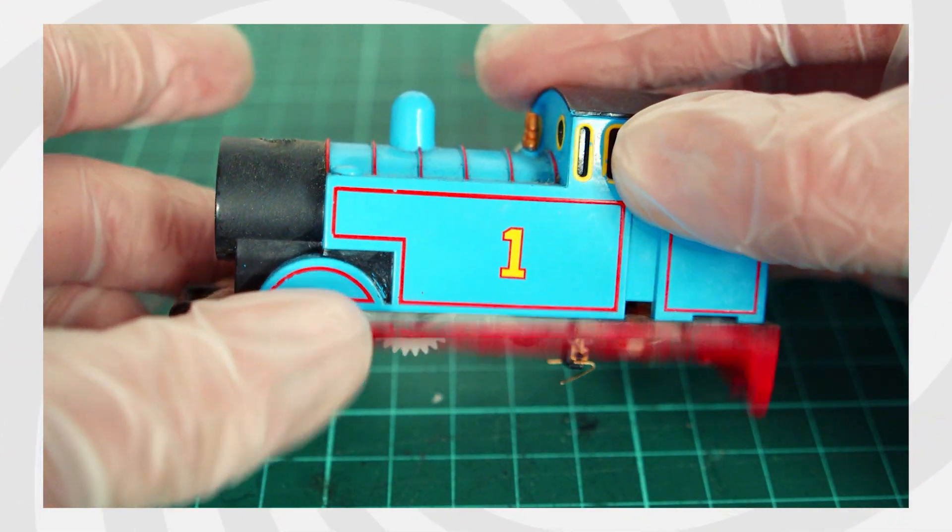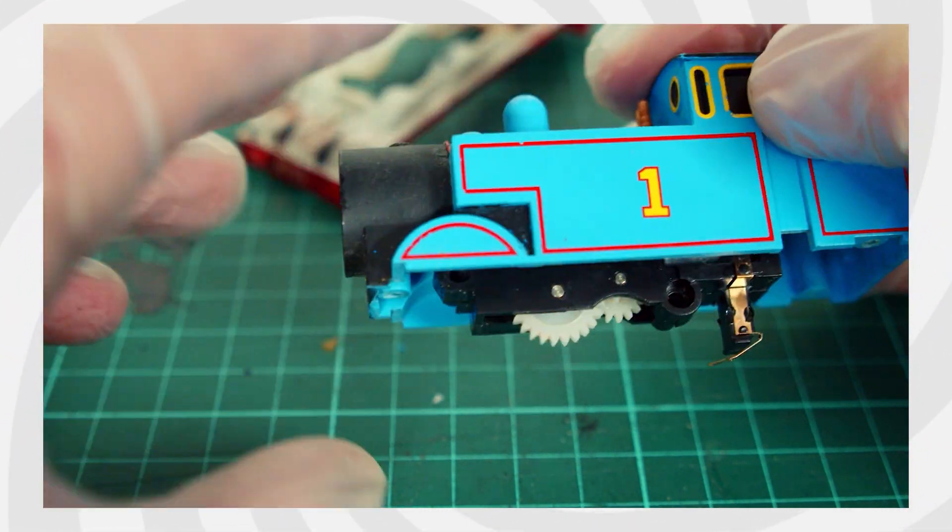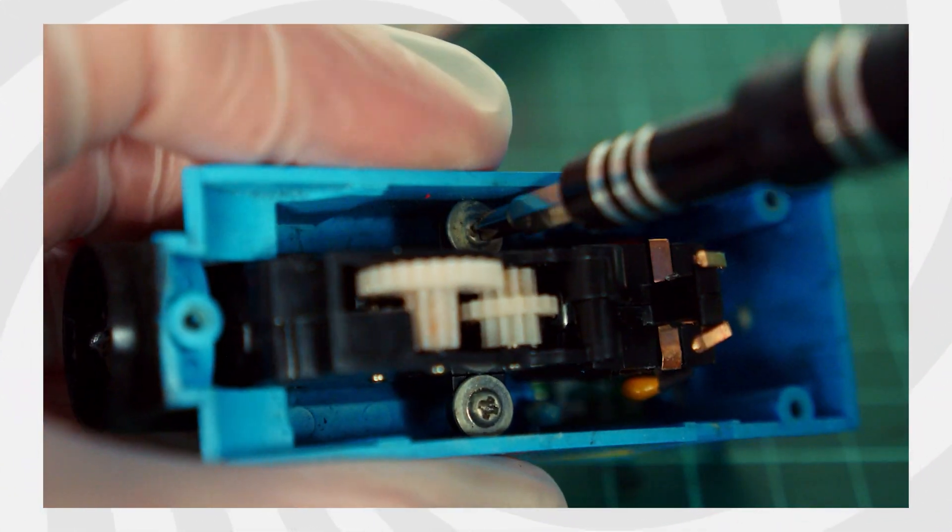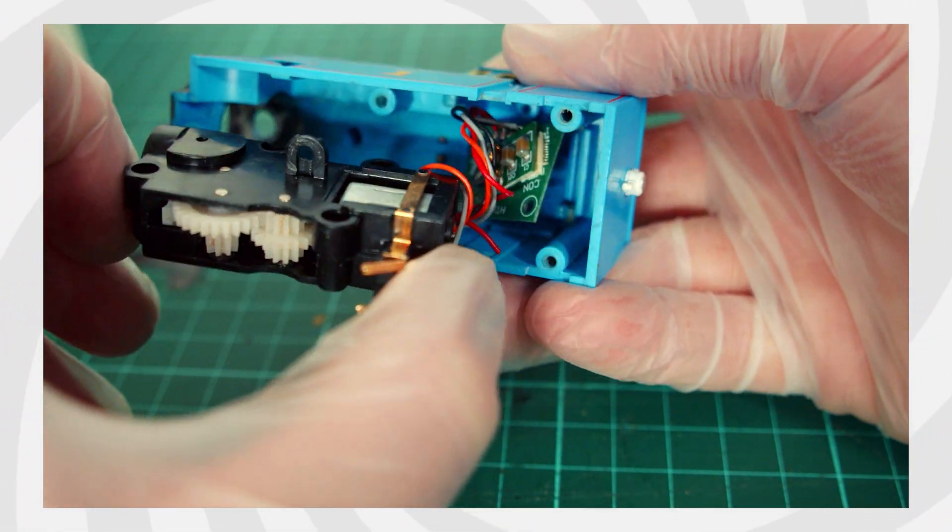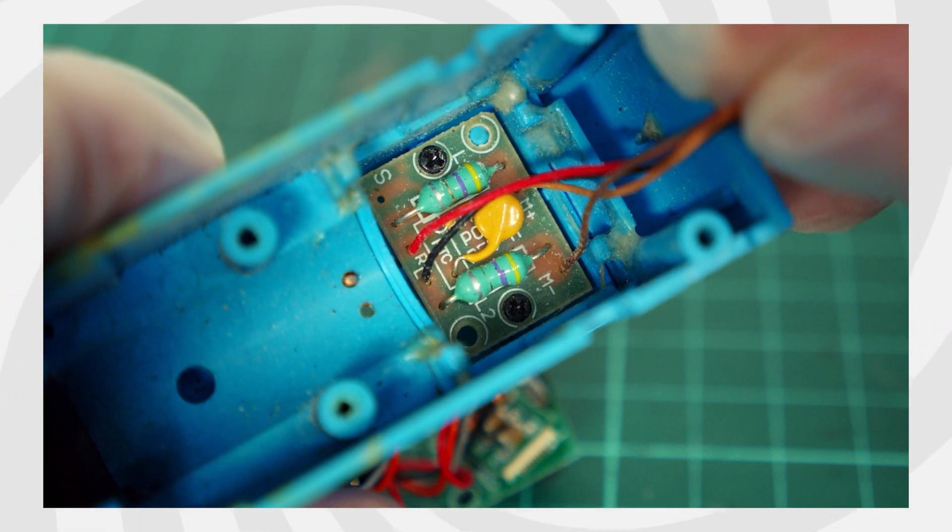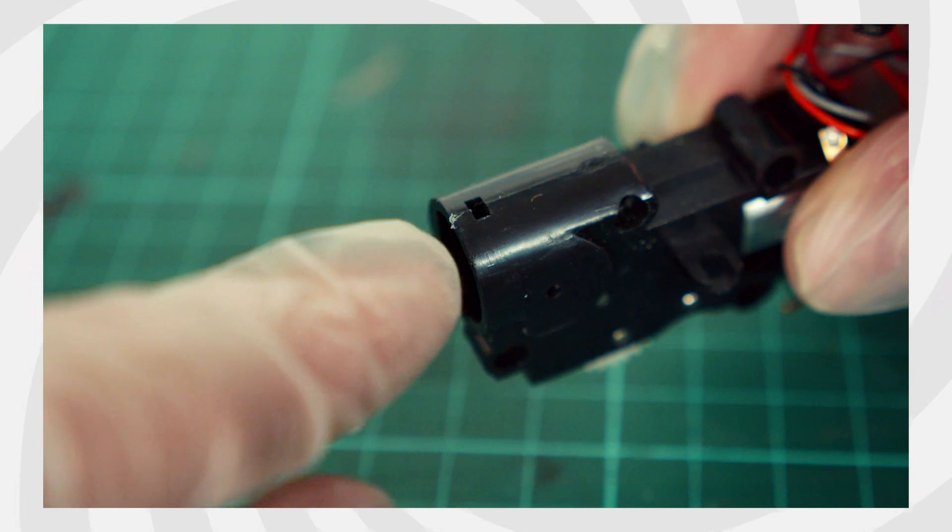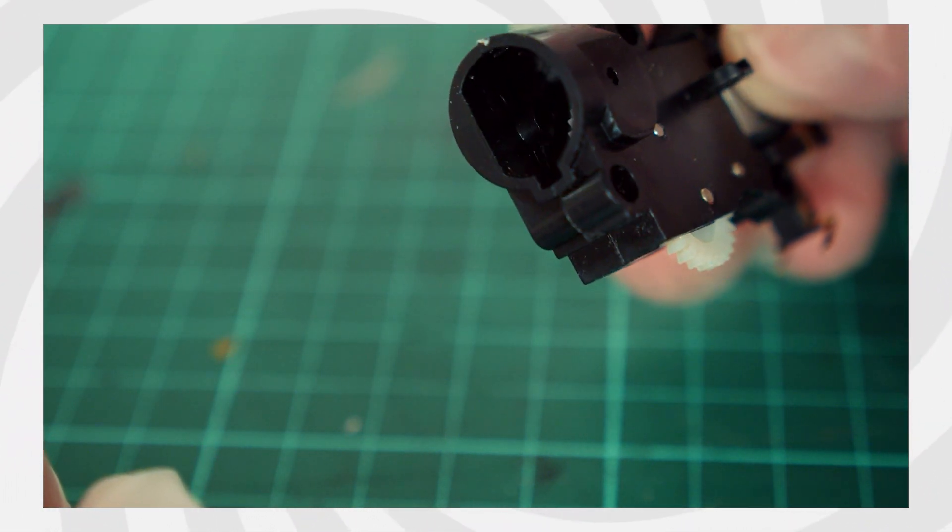Once this bottom portion has been removed, you can remove these three screws underneath the running board. You can now carefully remove the running board from the body shell. Next, you'll need to remove the motor housing by removing these two screws. This can then be removed from the body shell.